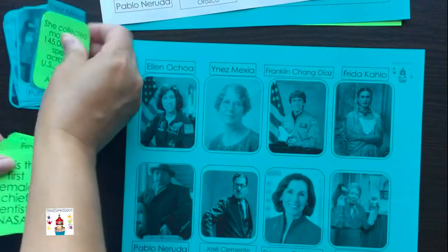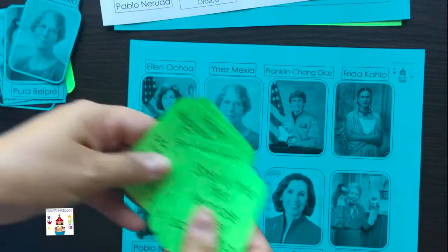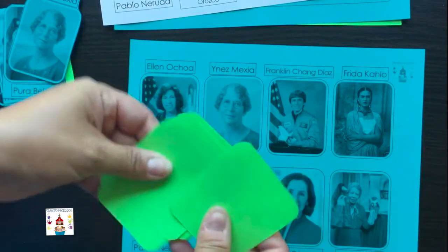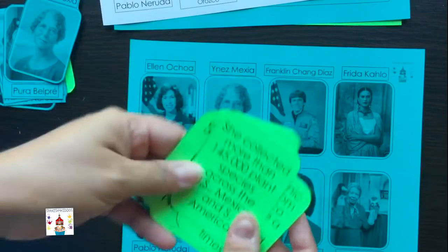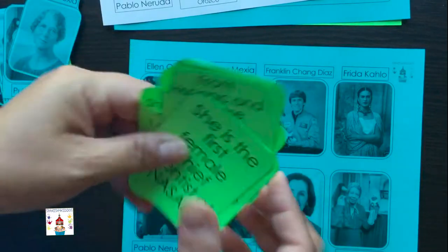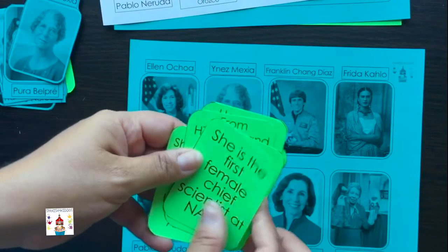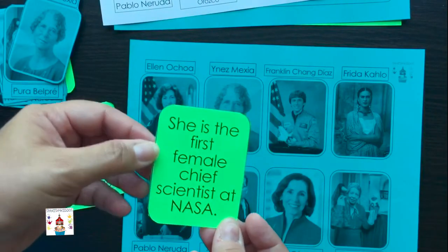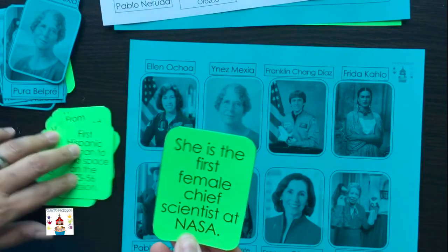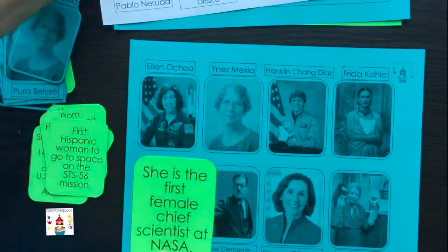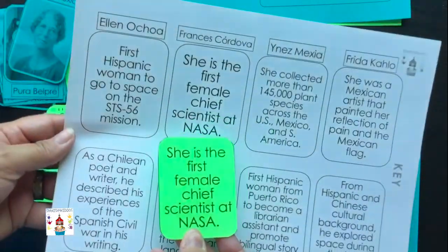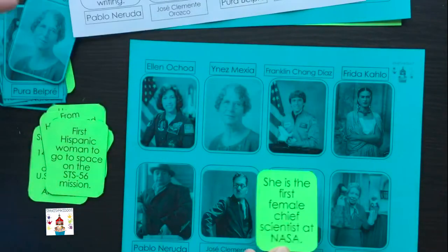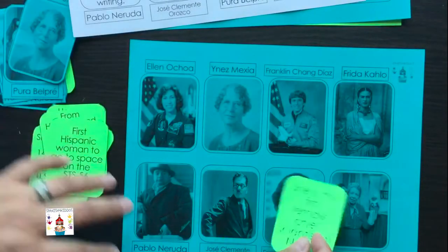You can also make a cute bingo. If you have different cards and go around like this, pick a card, and then read it — for example, 'she's the first female chief scientist at NASA.' You can read that clue aloud and have students figure out who it is.